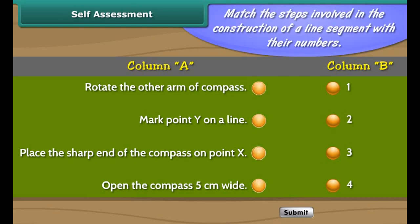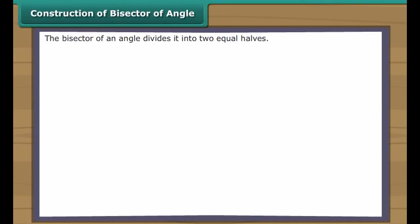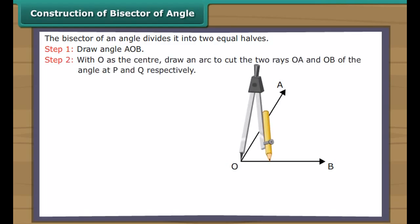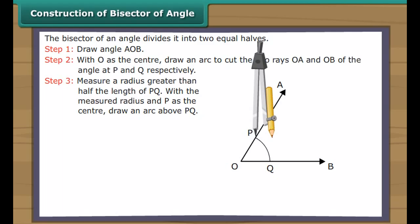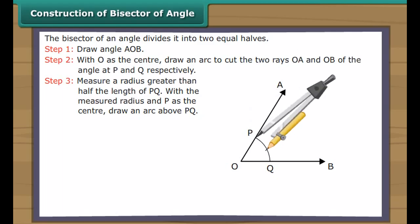Construction of bisector of an angle. The bisector of an angle divides it into two equal halves. Draw angle AOB. With O as the centre, draw an arc to cut the two rays OA and OB at P and Q respectively. Measure a radius greater than half the length of PQ. With the measured radius and P as centre, draw an arc above PQ, then with Q as centre draw another arc. Mark the intersection as C. Join O and C. Angle AOC equals angle COB, therefore OC is the bisector of angle AOB.